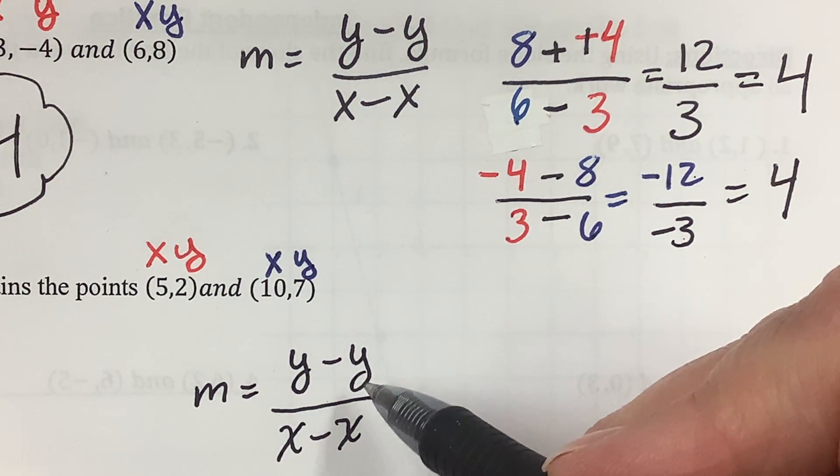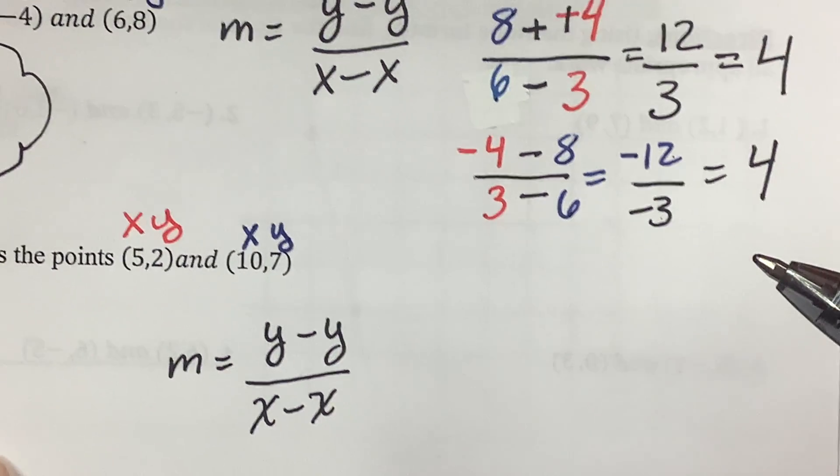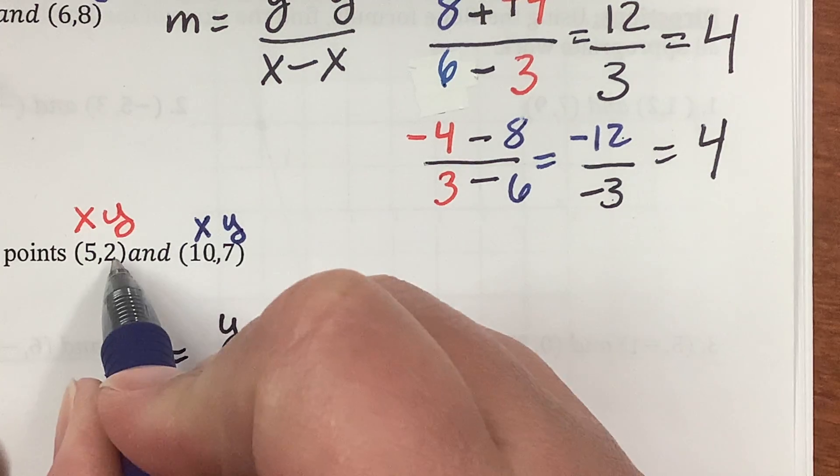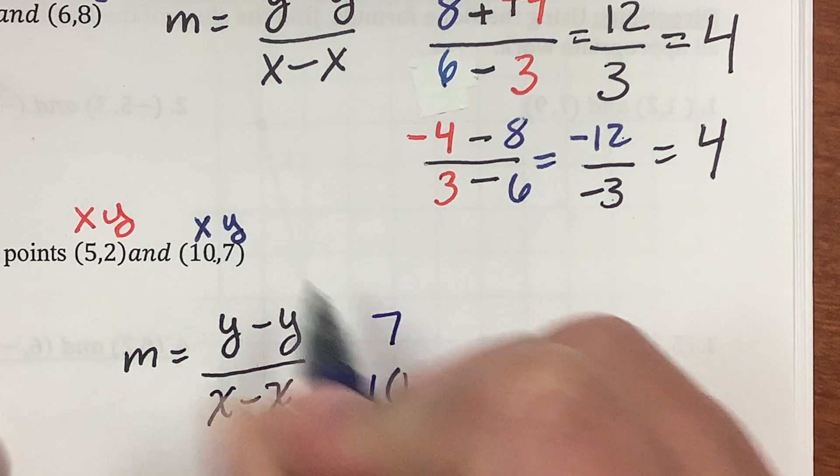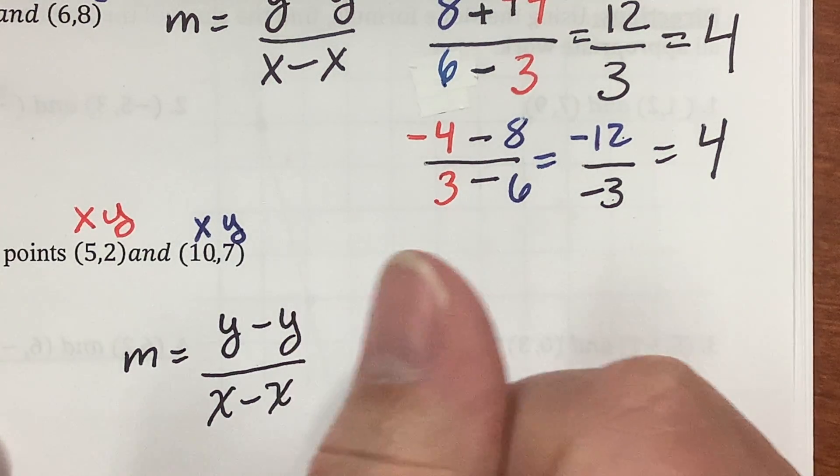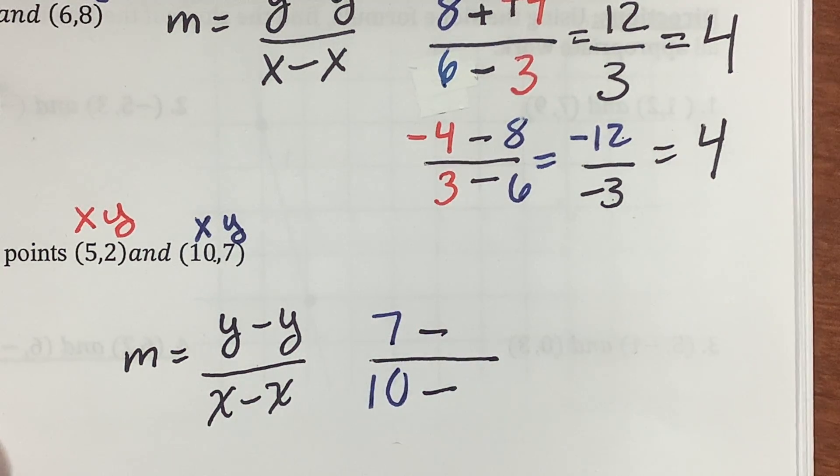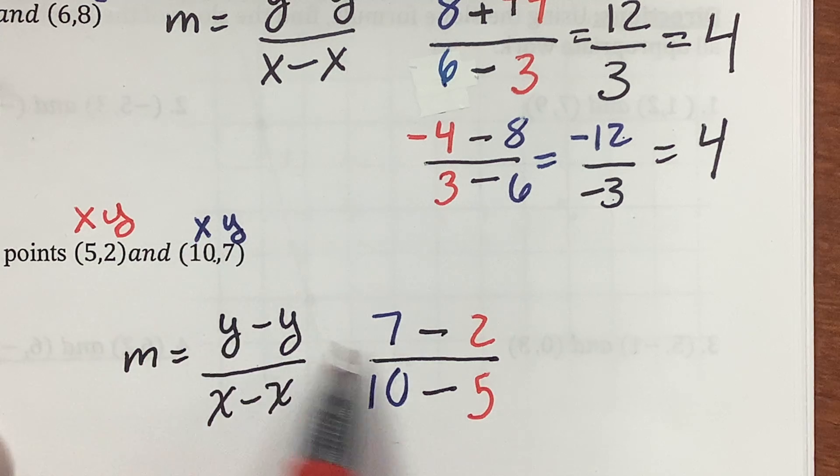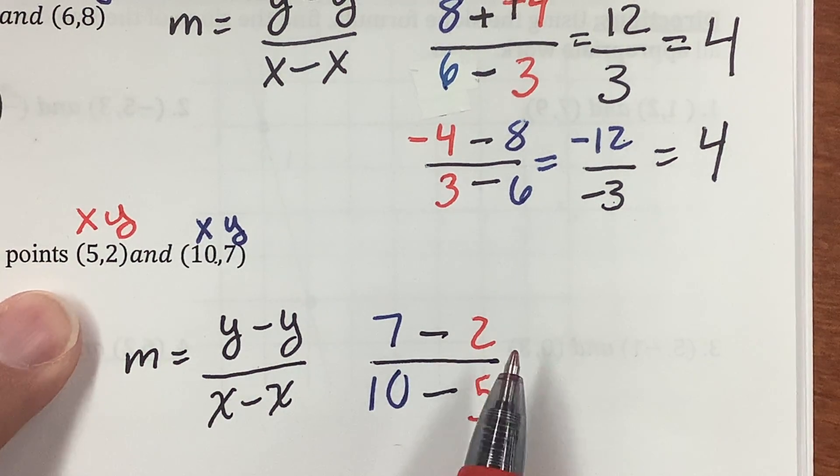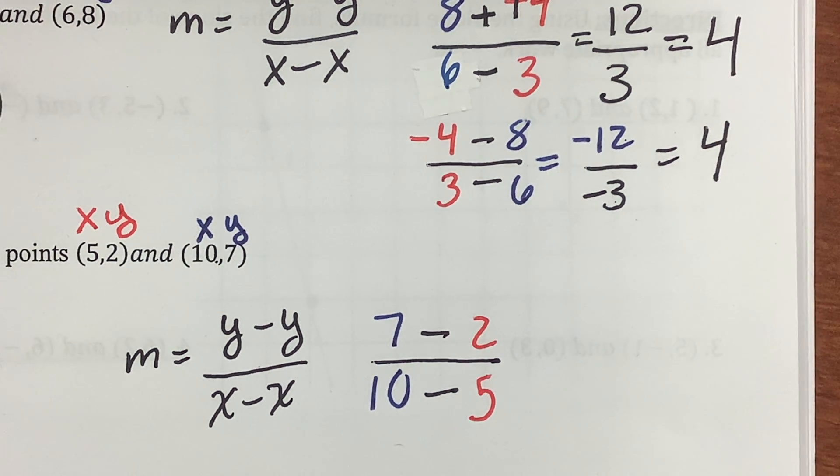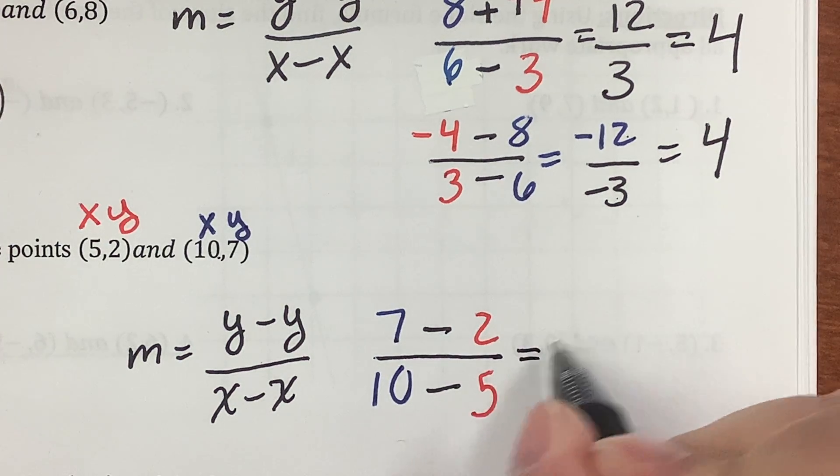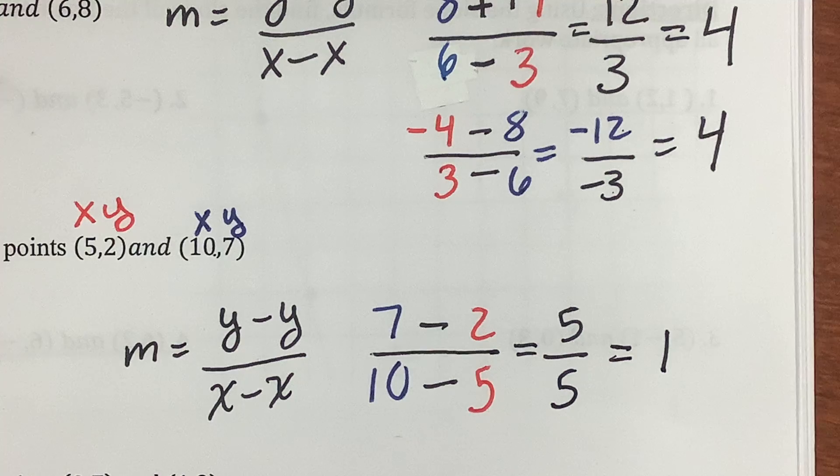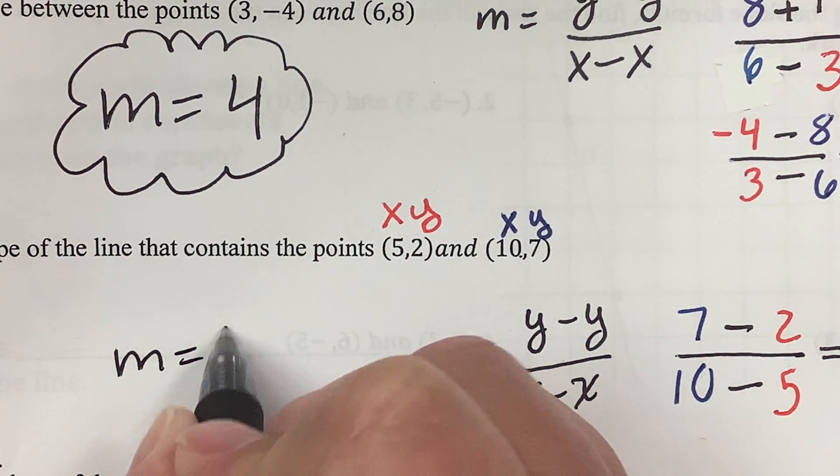M equals y minus y over x minus x. A lot of times they'll say y2 minus y1 over x2 minus x1. That's just adding extra stress. So, I'm going to do it larger minus smaller. So, here I have 7 minus 2. So, I'm going to put the 7 first. 7 over 10. Because it's always y over x. Minus 2 over 5. So, I'm making sure I have them together. Y over x. Y over x. I'm doing it in color because it's easier for me. So, let's see. 7 minus 2 is 5. 10 minus 5 is 5. 5 divided by 5 is 1. My slope, m equals 1. Puffy cloud of happiness.